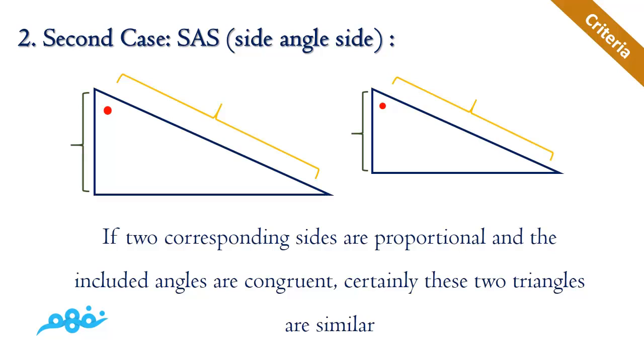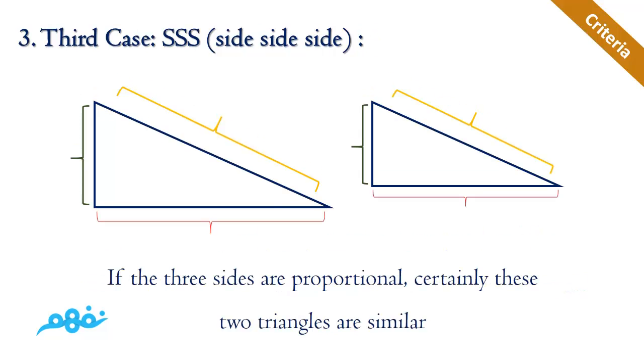The last case is SSS, or side-side-side. It's the easiest way—when you have three sides that are proportional and have the same ratio k, certainly the triangles are similar. Hope you enjoyed it and thanks for watching.